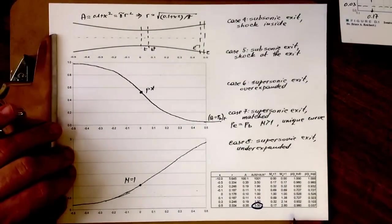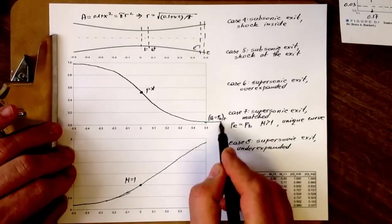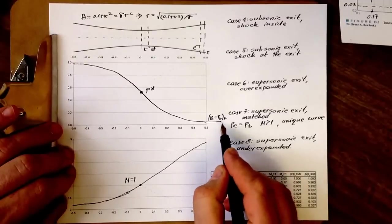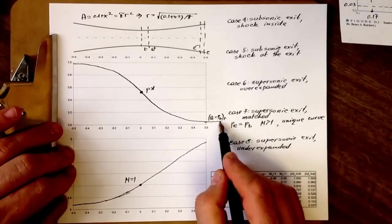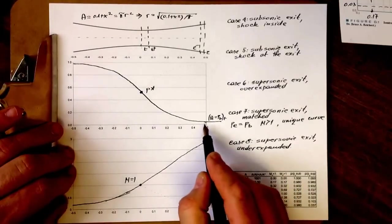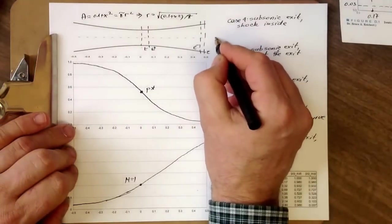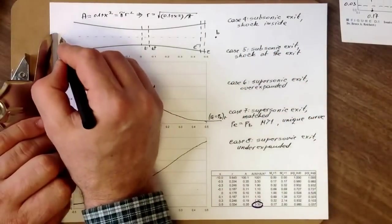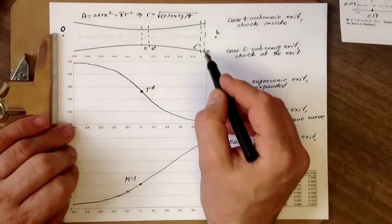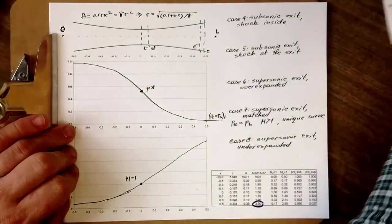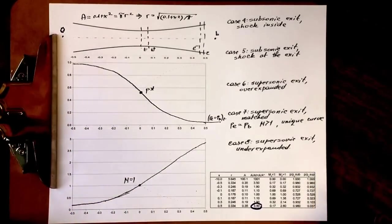This is case seven and it's called matched because the exit pressure exactly matches the back pressure, so there is smooth transition out. Now what happens if the back pressure is not equal to exit pressure but is somewhat larger? Remember, we are actually controlling the flow by changing back pressure here. We have no direct control of exit pressure—it can be equal to back pressure but often it's not. I'll continue analysis in the next video. Thank you.